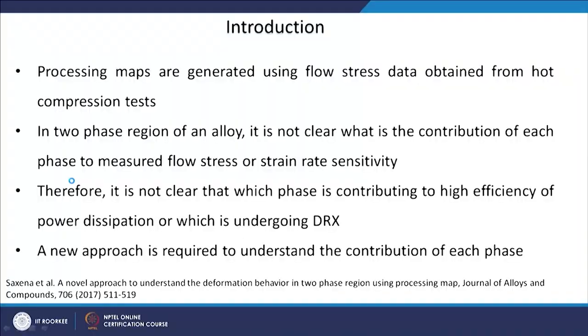For this particular work we have stuck to the dynamic materials model. The idea here is that when generating a processing map, we are only using flow stress data obtained from hot compression tests. You compress a cylindrical specimen, measure the flow stress, measure the strain rate — that is, how fast you are applying compression to the material. From that, I know the strain rate, I know the temperature, and from flow stress we calculate the processing map.